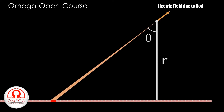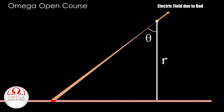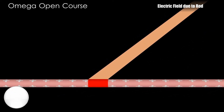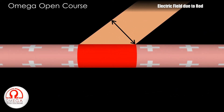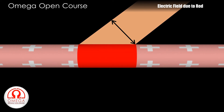To find the electric field due to this small part, we need to find its distance from the point and the charge on it. Since the part of the rod is at an angle theta, its distance from the point is R divided by cos theta. Since this line lies at a distance R/cos theta from the point and subtends angle d-theta at the point, the length of this line must be R/cos theta multiplied by d-theta.